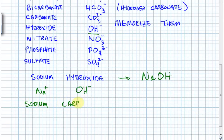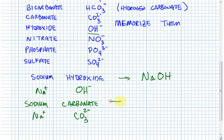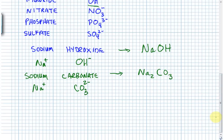Next: sodium carbonate. Sodium is in column 1 — always plus 1. Carbonate, from memory, is CO₃²⁻. We need to combine a plus 1 and a minus 2 ion into a neutral compound. Two sodiums each with plus 1 gives a total charge of plus 2, which exactly balances one carbonate at minus 2. The formula for sodium carbonate is Na₂CO₃.